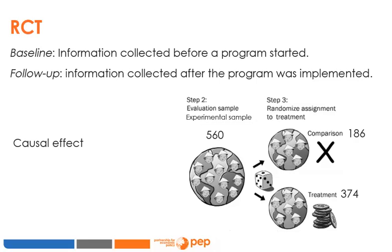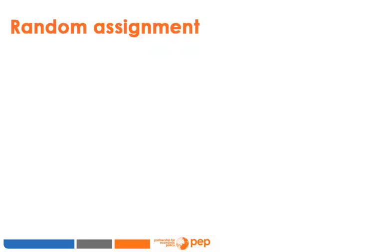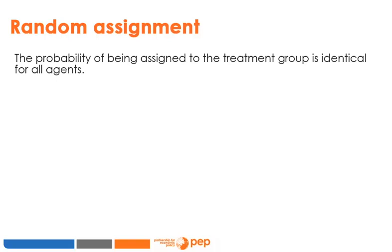When evaluating a program, we want to estimate the causal effect of a treatment on an experimental sample drawn from the population of interest. Using random assignment, the probability of being assigned to the treatment group is identical for all agents. Therefore treatment status D is statistically independent of the subject's potential outcomes. Furthermore, the assignment D is independent of the agent's background attributes X. Geometrically, potential outcomes Y_T and Y_C and background attributes X are orthogonal to the assignment — either to the treatment group (D=1) or control group (D=0).